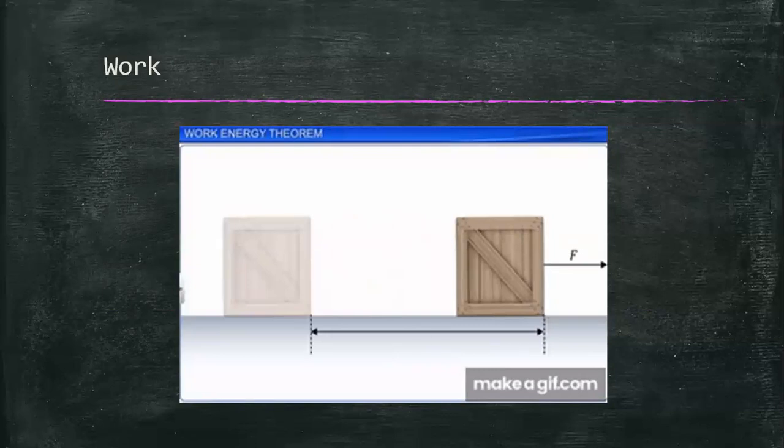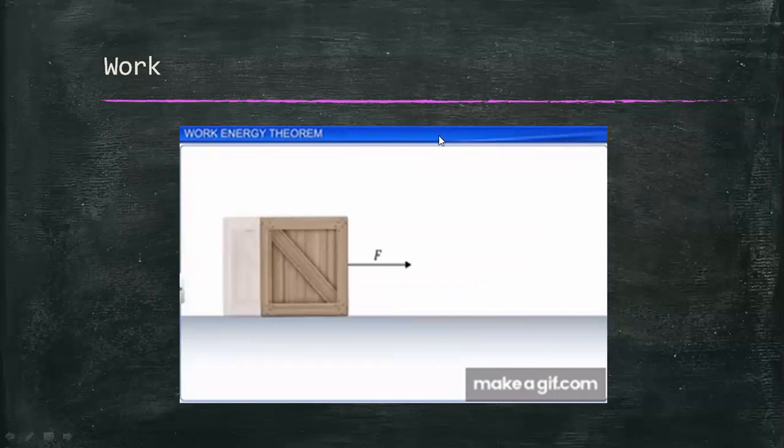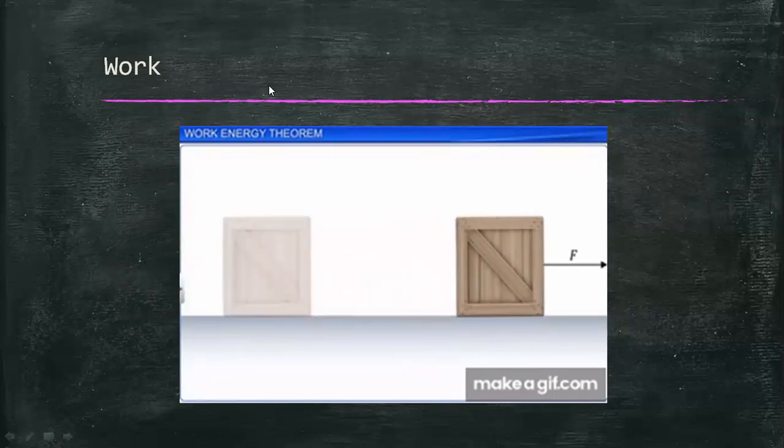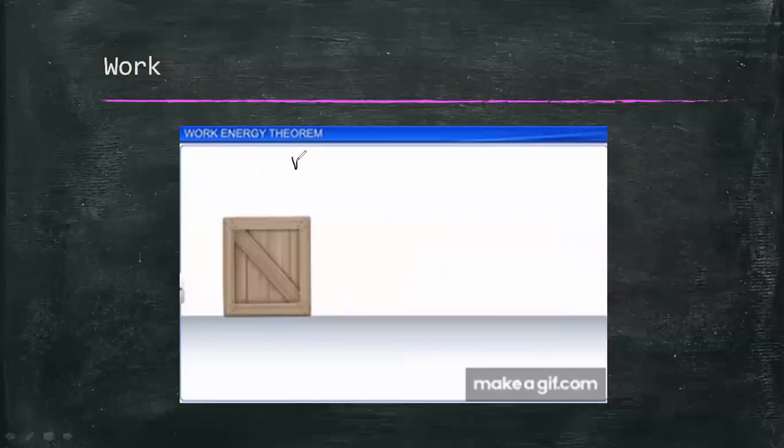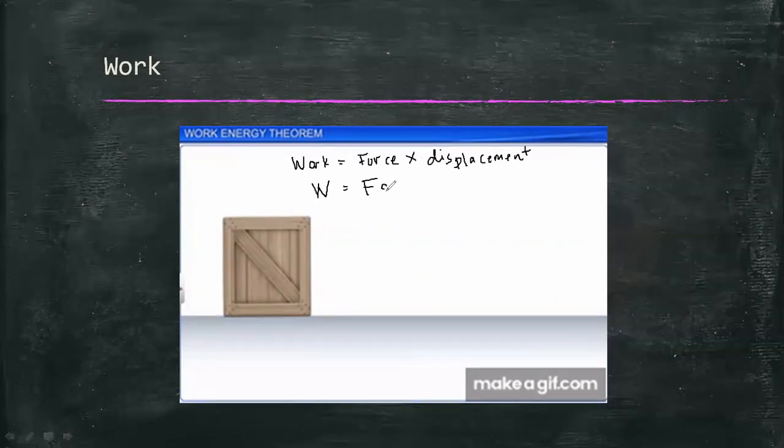Force and displacement are the two essential elements of work. Work is defined as the magnitude of the force times the magnitude of displacement. The symbol we use for work is capital W, for force we have F, and in this case we will use the symbol S for displacement.